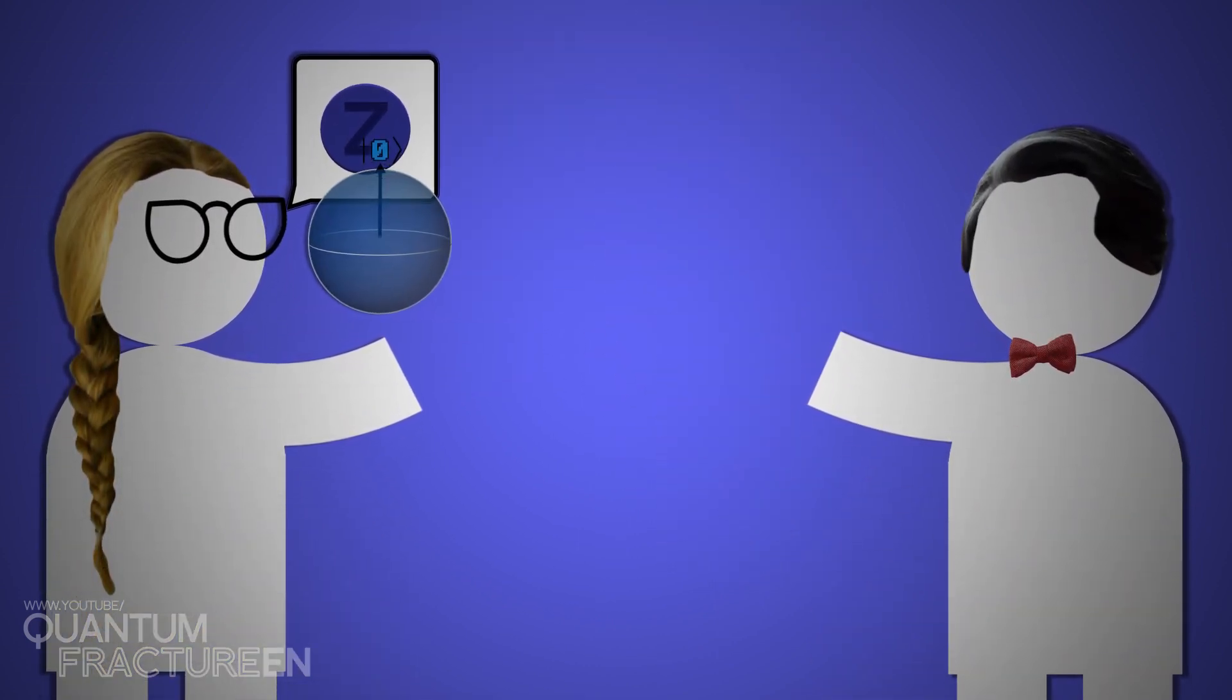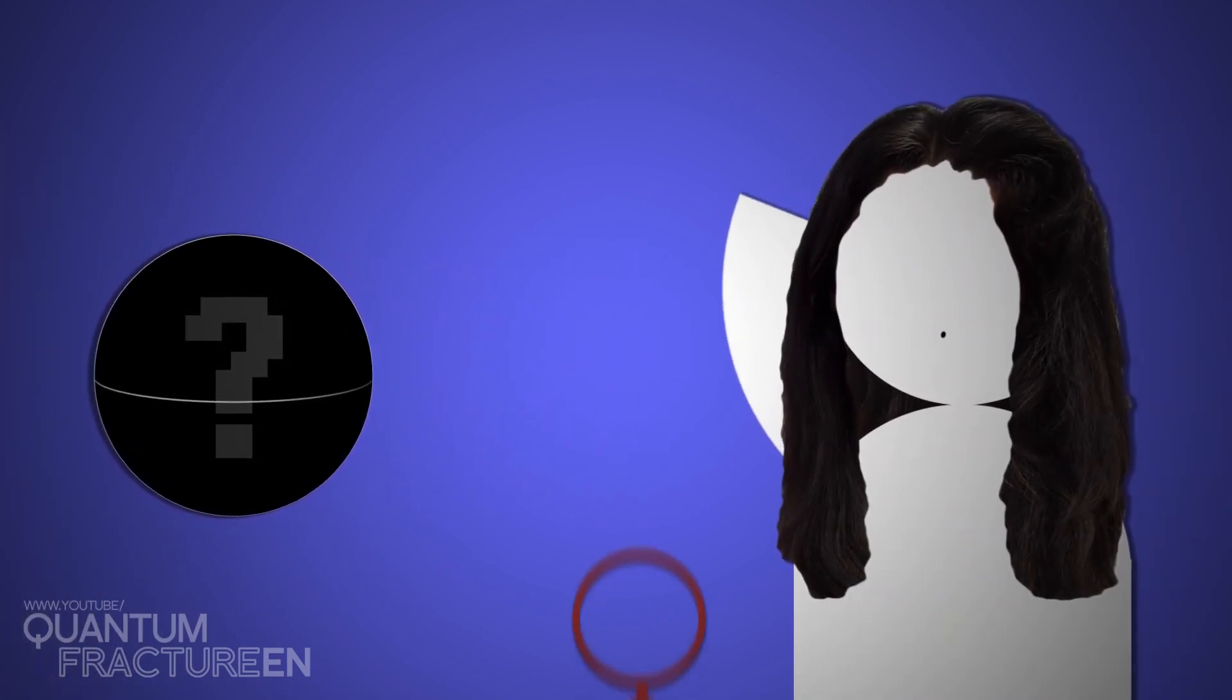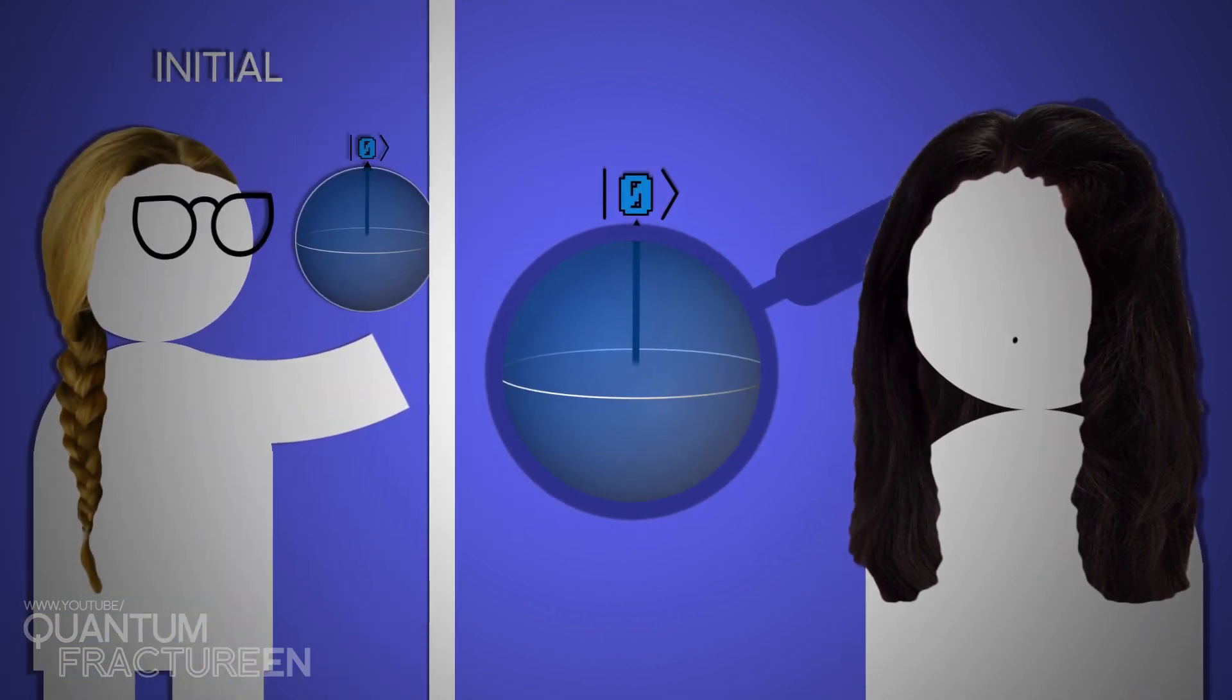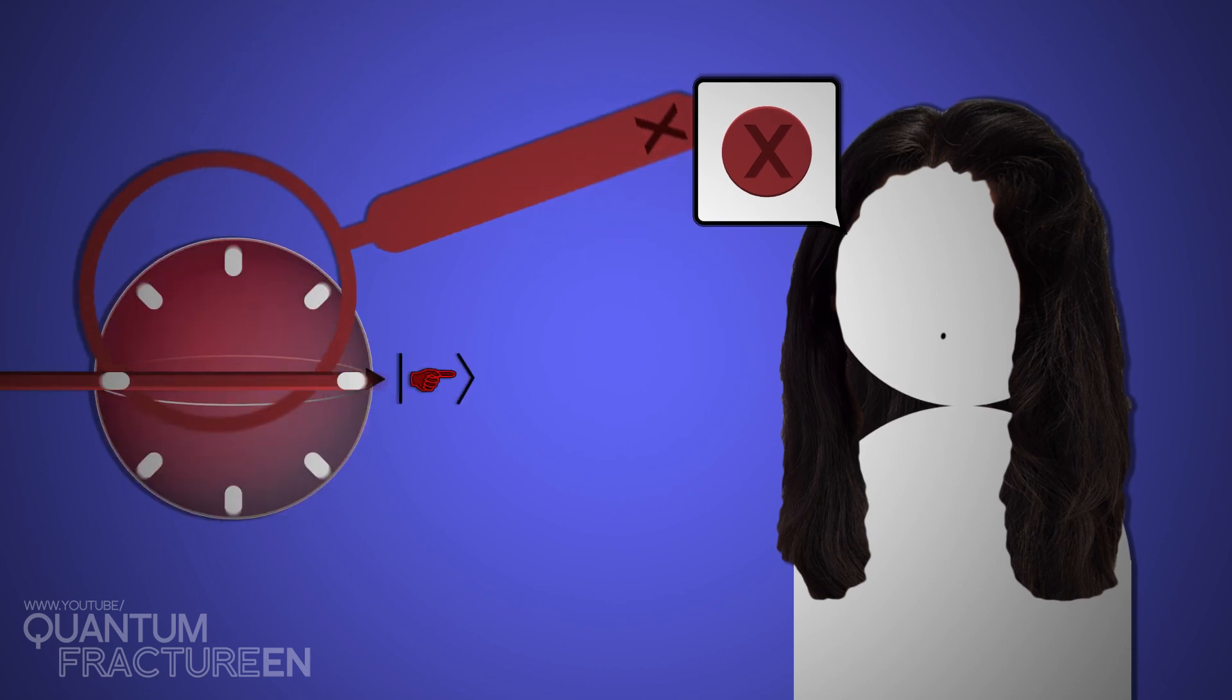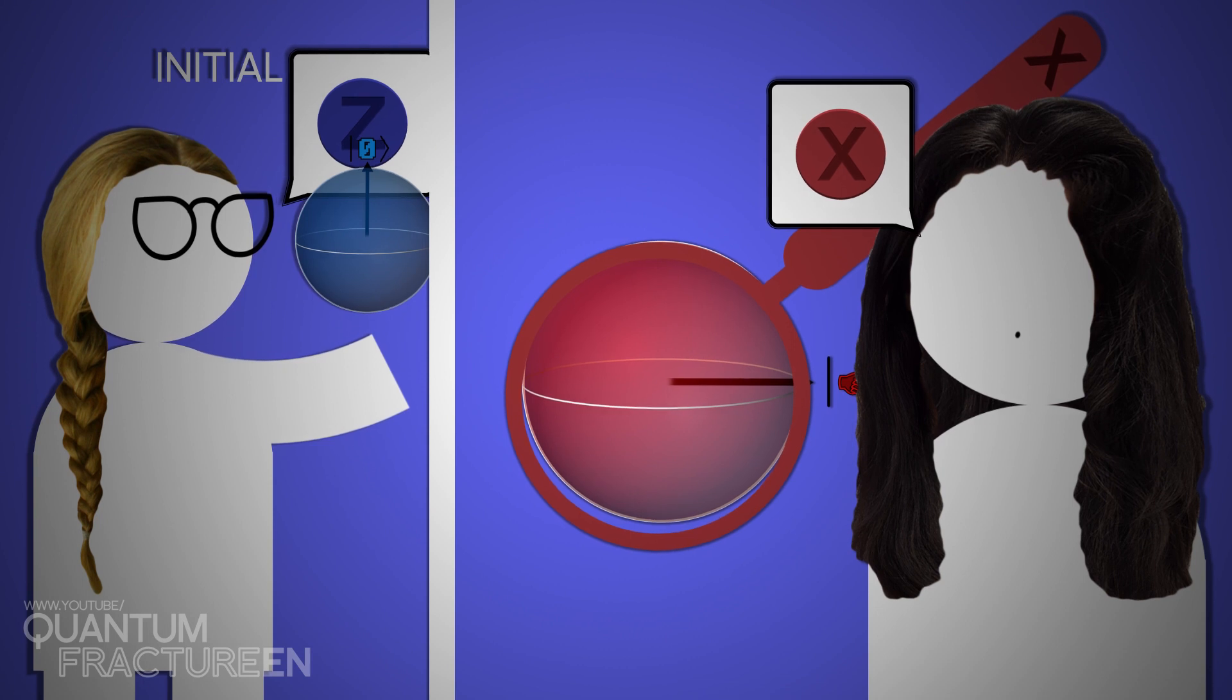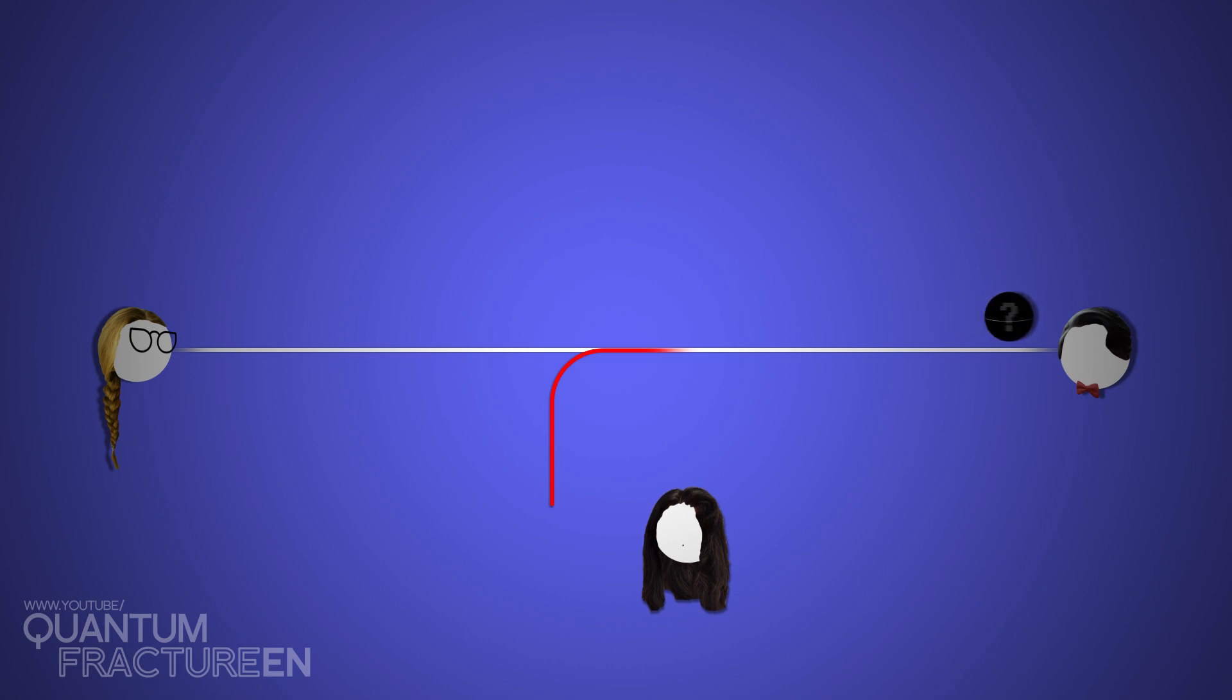Alice prepares a qubit in zero state and sends it to Bob, but Eve intercepts it before it reaches him. Eve doesn't know the qubit's initial state, so she can try to figure it out in one of the two ways. Measure it on the x-axis or on the z-axis. If Eve gets it right and measures on z, she'll obtain the value Alice wanted to send and the qubit will remain as it was. Her action will go unnoticed. But if Eve gets it wrong and measures on the x-axis, the zero state will randomly be plotted as a left or right state. Let's assume it goes right. Get this, Eve has destroyed the initial state in which Alice prepared the qubit, and she doesn't even know it. She can't tell if Alice sent the qubit that way, or if she was the one who altered it. Not wanting the couple to get suspicious, Eve sends the qubit on to Bob.